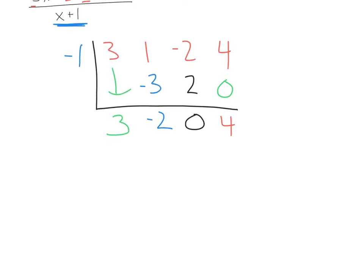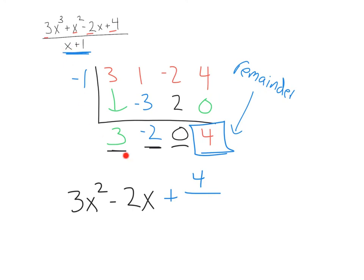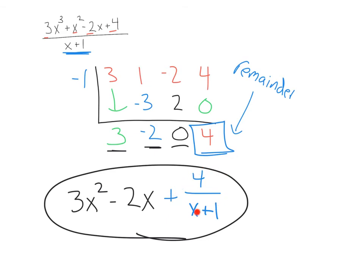From here we've got three x squared minus two x plus zero. Since it's plus zero, we don't really need that, so I'm going to take that out. This four here is our remainder. Think back to what we did with the remainder in long division — we add it, so we say plus four divided by whatever we were originally dividing by, which is x plus one. So the final answer is three x squared minus two x plus four over x plus one.